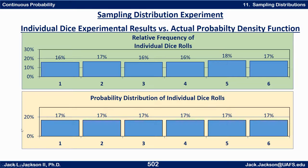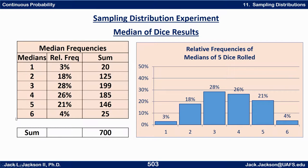Now let's look at the medians for 700 rolls. Notice the bars aren't the same height — this suggests the probability is not the same for each value. Why would that be? To get a median of one, you've got to have at least three ones in your group — that's going to be kind of hard to do, not many ways that can happen. To get a six for a median, you have to have at least three sixes. Looks like three or four percent of the time those things are going to happen. It's going to be a lot easier to get a three or four for the median.